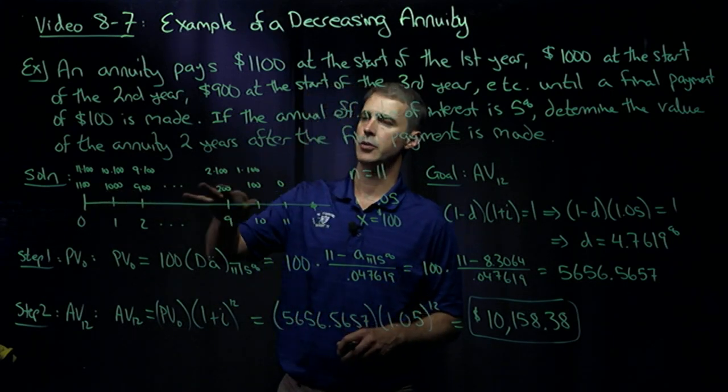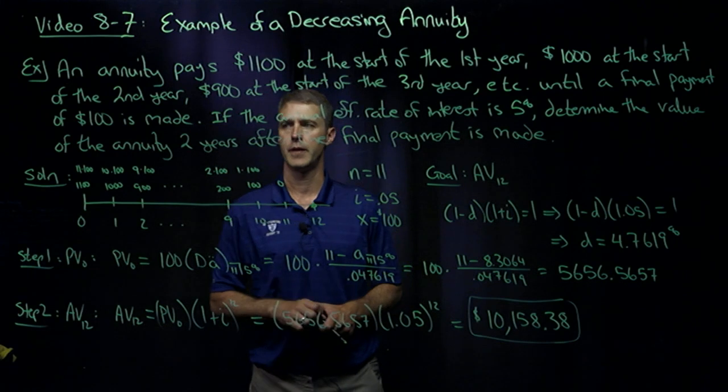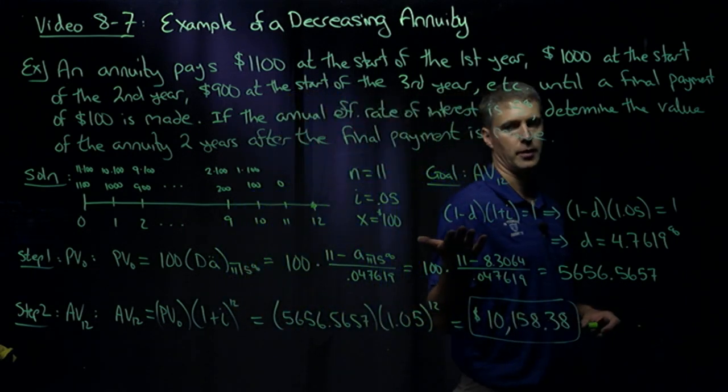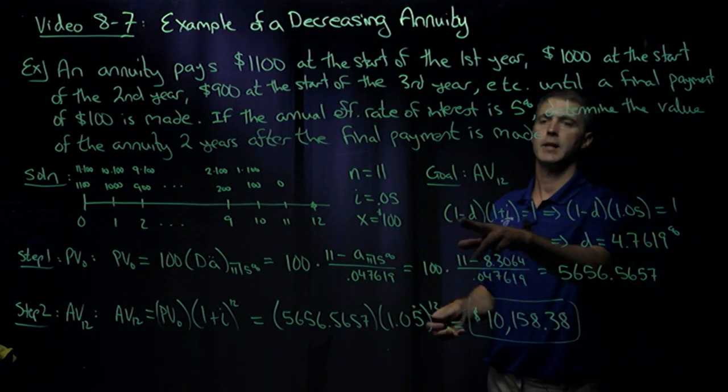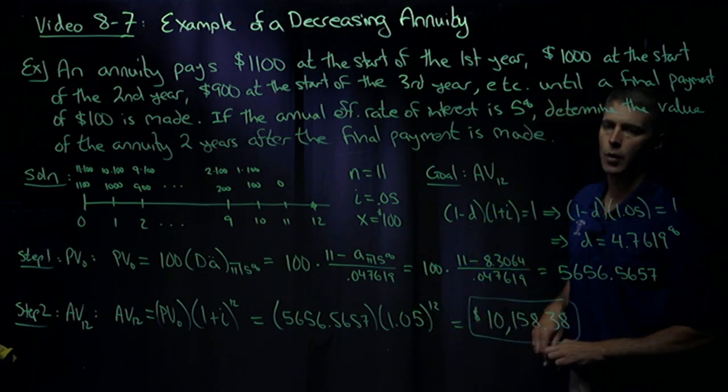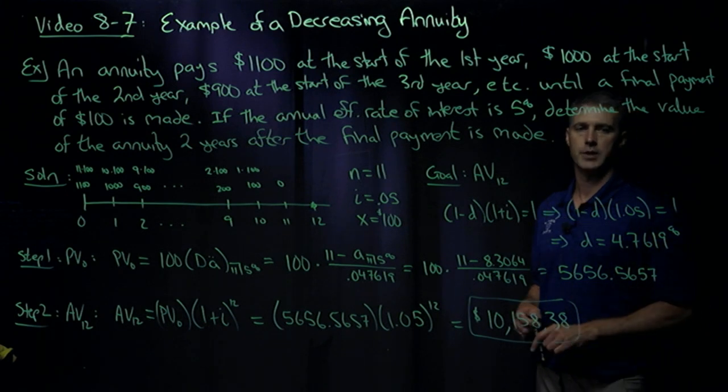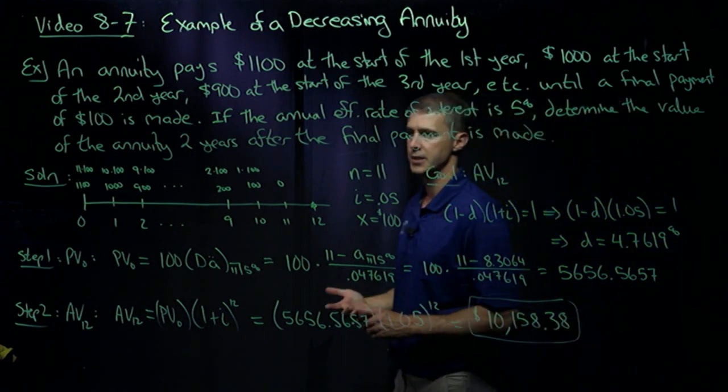So this is a decreasing annuity due, and I know the formula for that involves the discount rate per period. So over here, I calculate my discount rate. 1 minus D times 1 plus I is always 1. So I plug in my I value, I solve for D, and I have a 4.7619% discount rate.